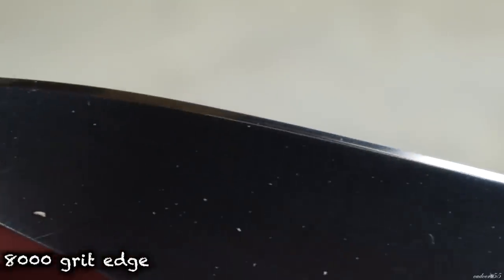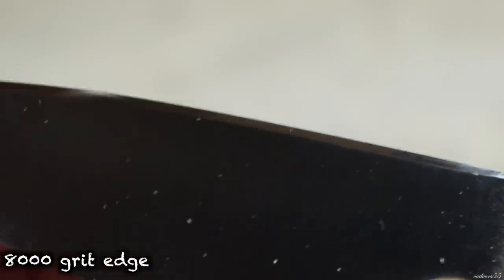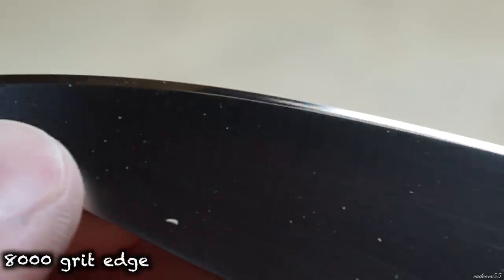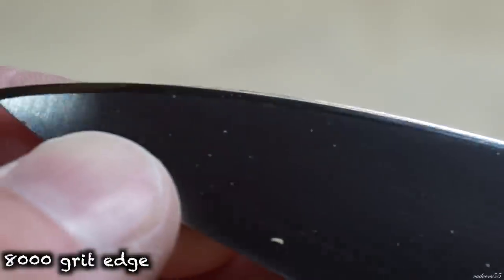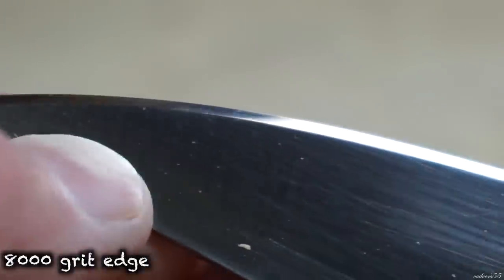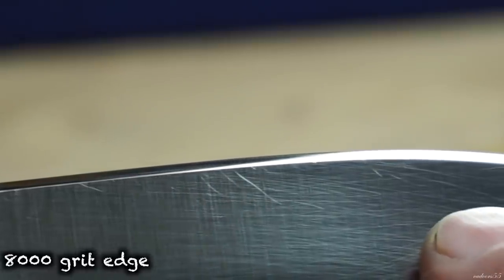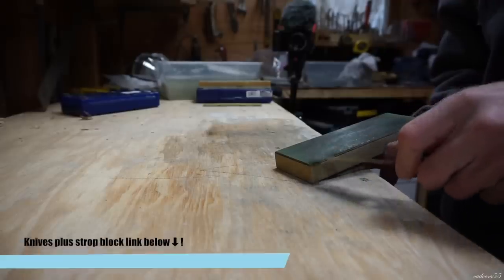And here's the edge off of the 8000 grit stone and you can really see some of those lower grit scratches still coming through. However this is an absolute mirror polish in real life and those scratches can only be seen under magnification.